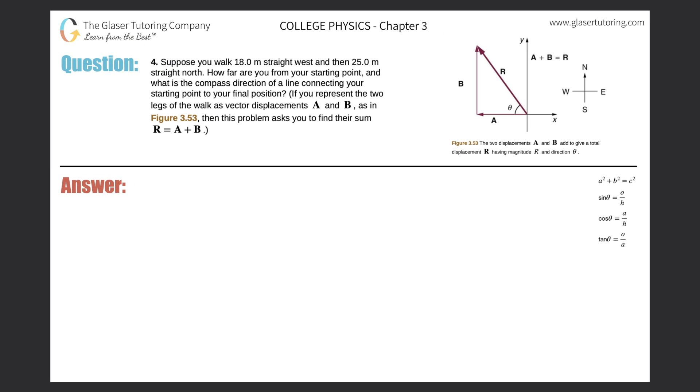Number four: Suppose you walk 18 meters straight west and then 25 meters straight north. How far are you from your starting point, and what is the compass direction of a line connecting your starting point to your final position?